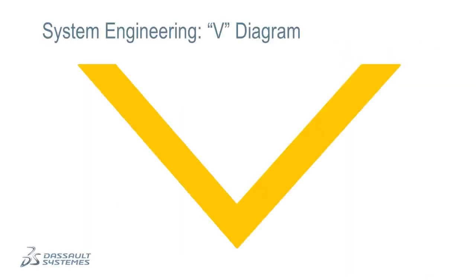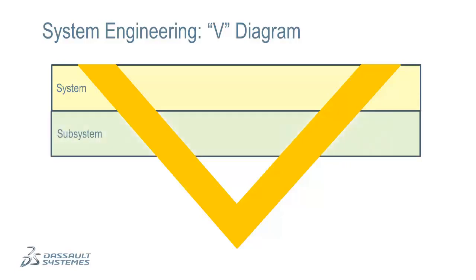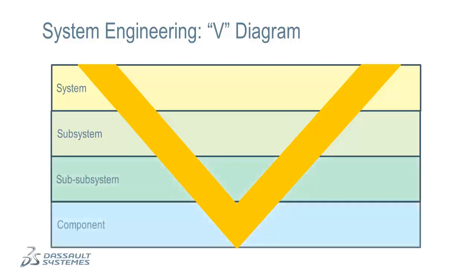Let's start by introducing the system engineering V-diagram. The V-diagram is a common way of visualizing the system engineering process. The process starts by collecting customer or regulatory requirements at the system level. These system level requirements are then studied to understand how they translate into requirements for the subsystems, and this process continues all the way down to the component level. In this way, the requirements at the system level are used to formulate requirements for the individual components in the system.